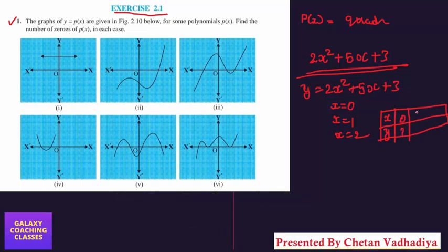We are supposing x = 0, then we will get y = something, then x = 1, x = 2, and so on. Then we can represent that on the graph. But here in polynomials you are not going to get a straight line. In linear polynomials we are getting straight lines, which we learned in Class 9.